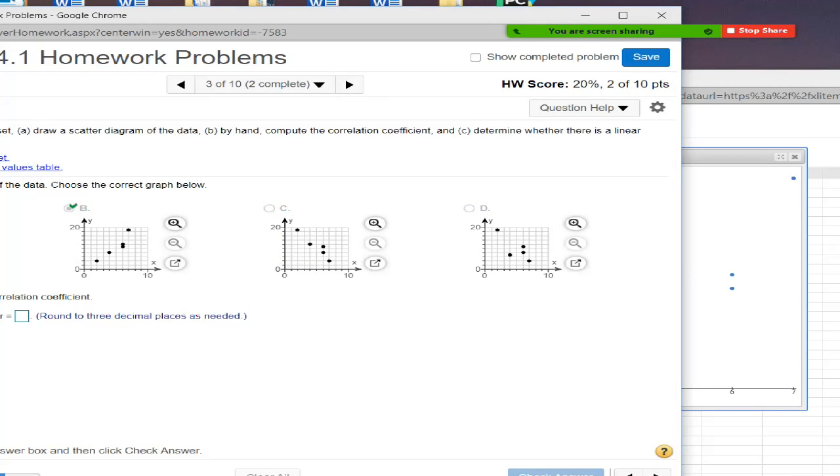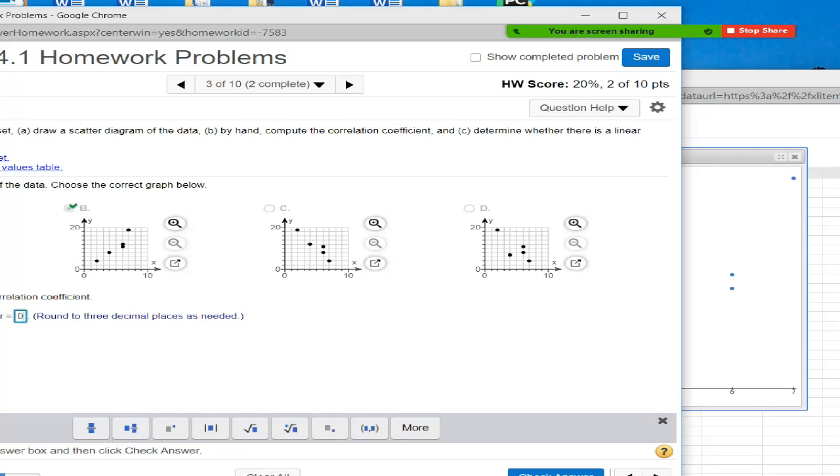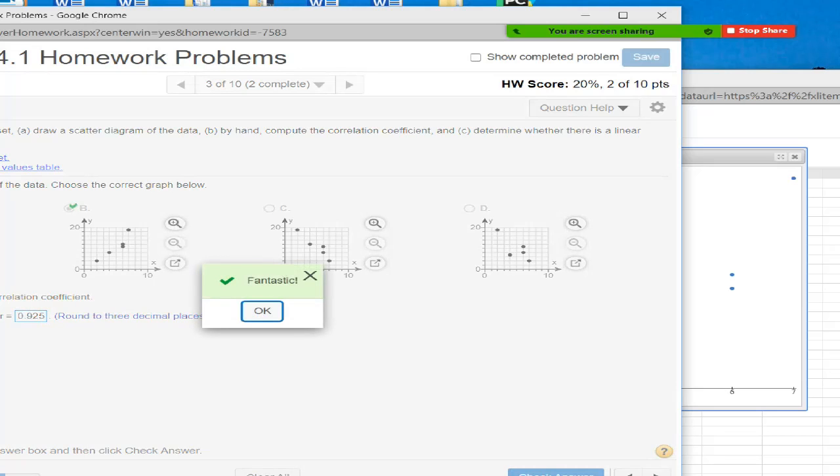And now the correlation coefficient rounded to three decimal places. So now I'm going to take this number 0.9249, go to the fourth decimal place in order to round to 0.925. So StatCrunch makes it super easy.